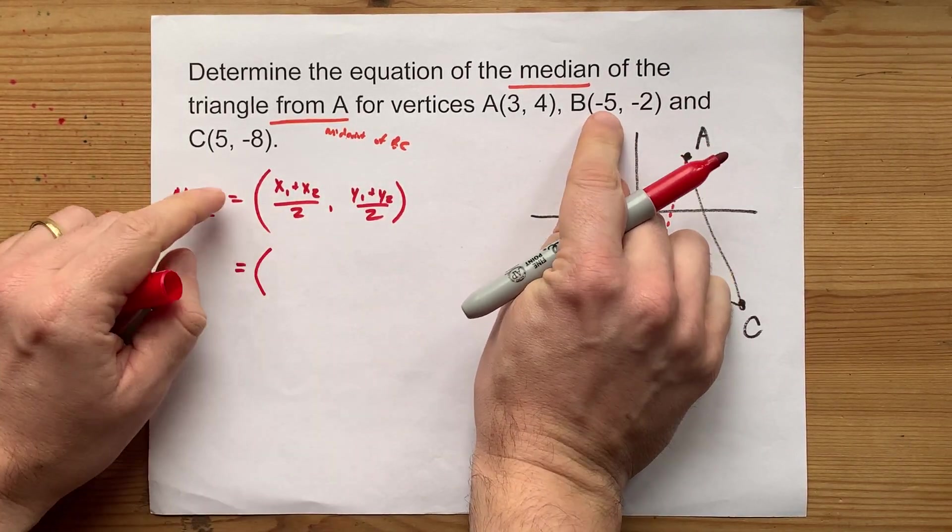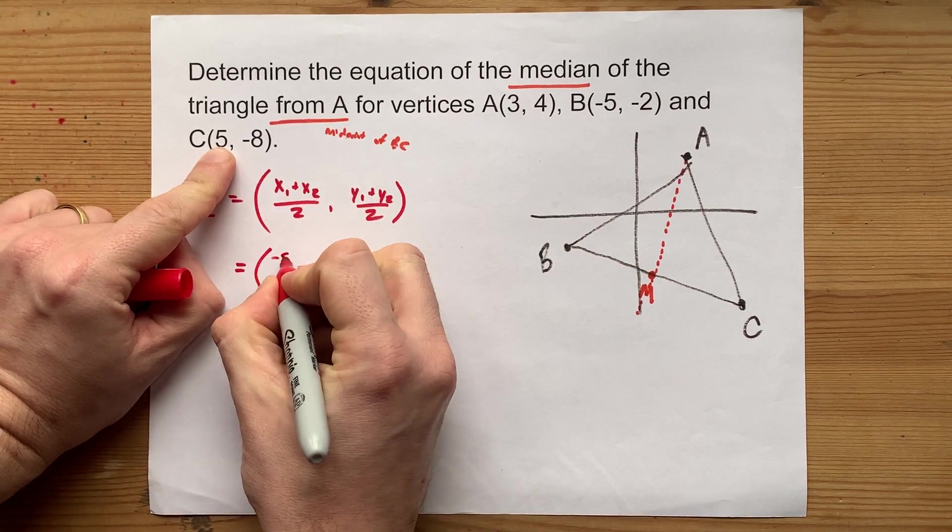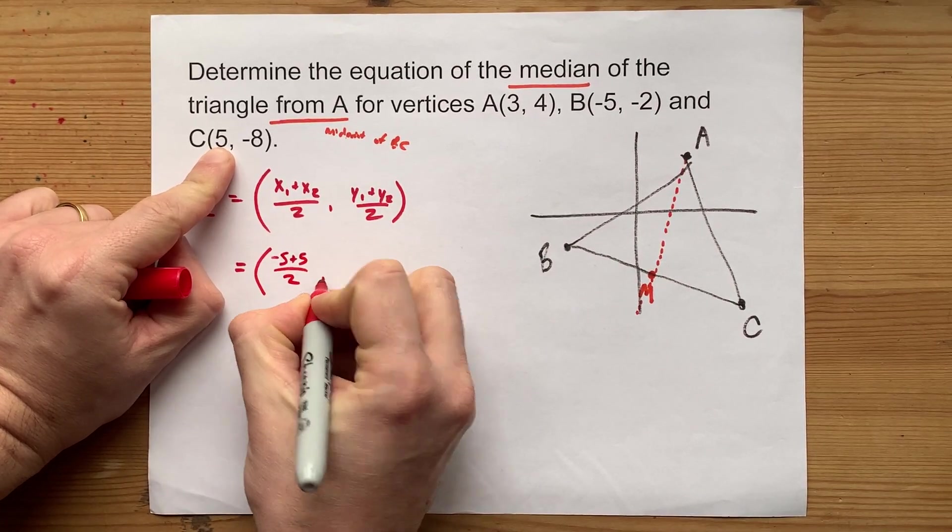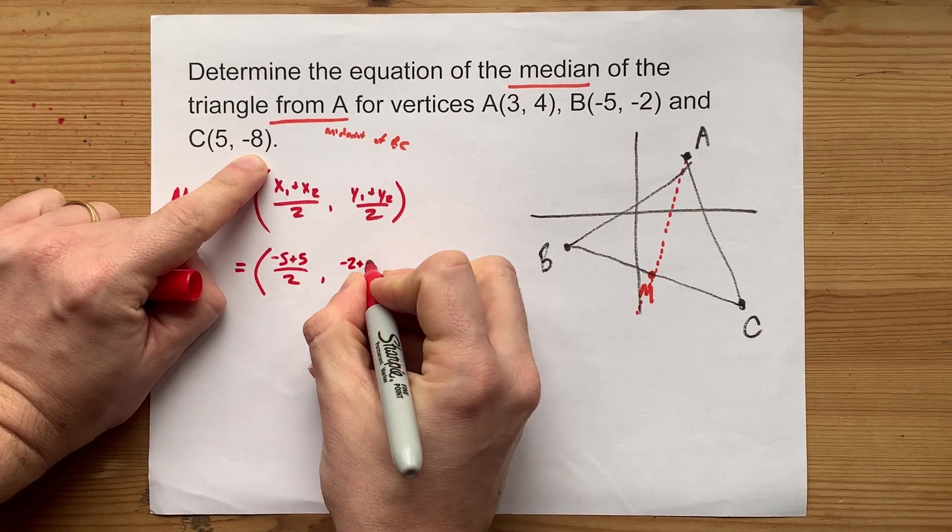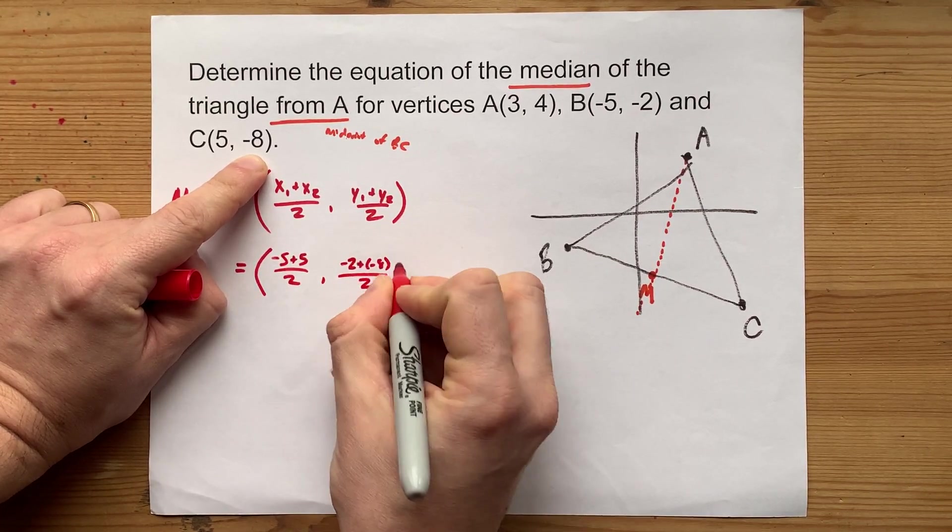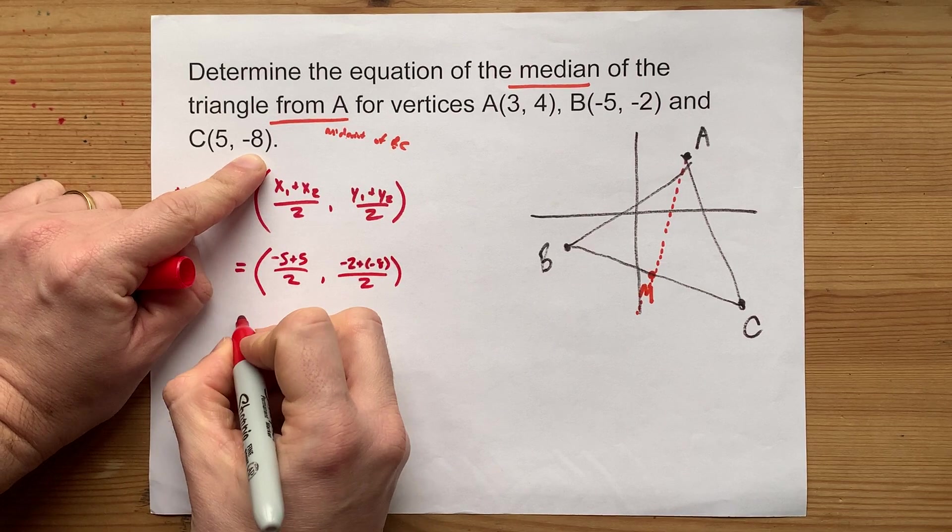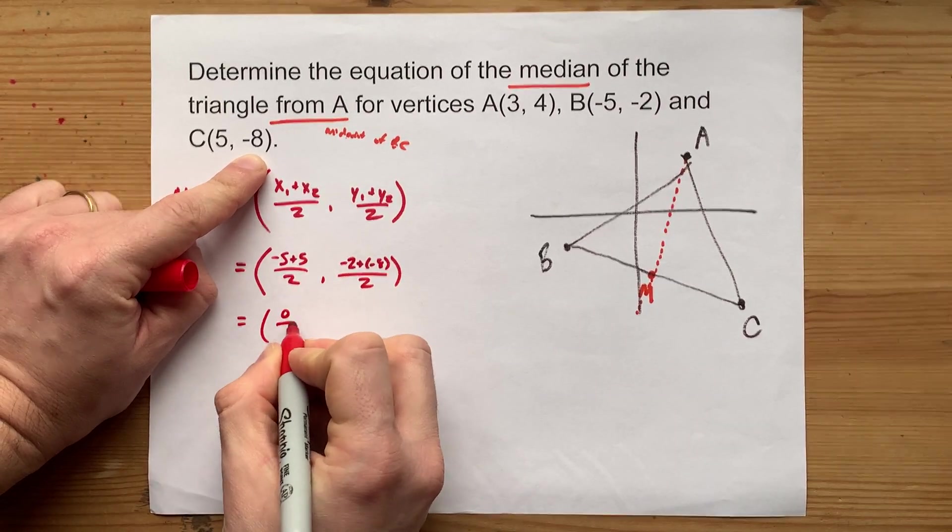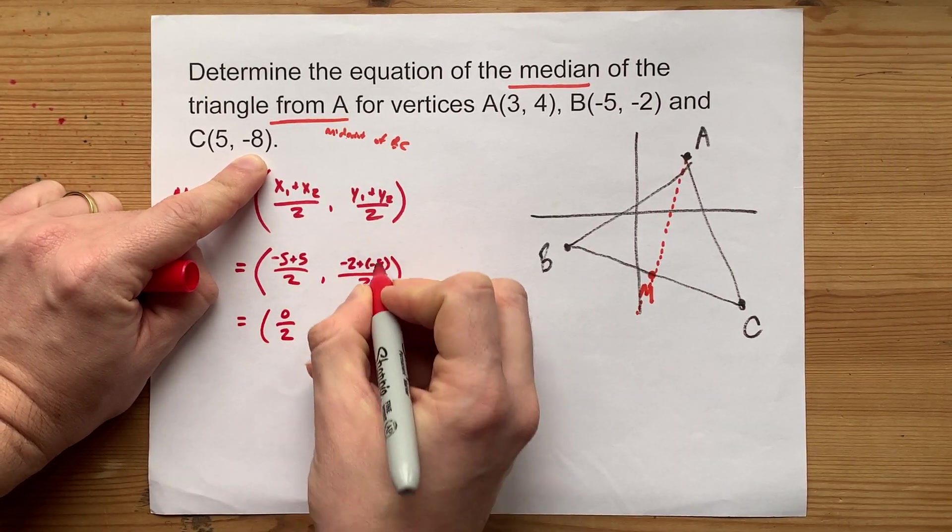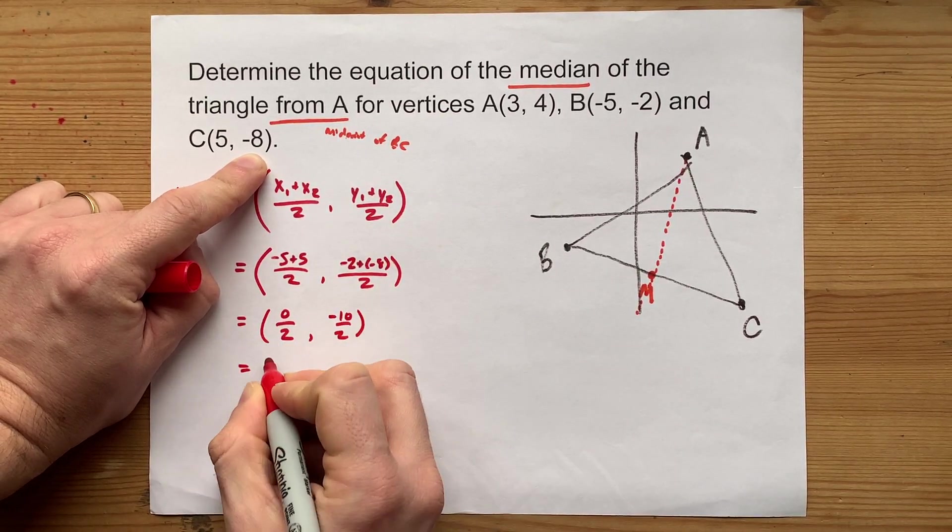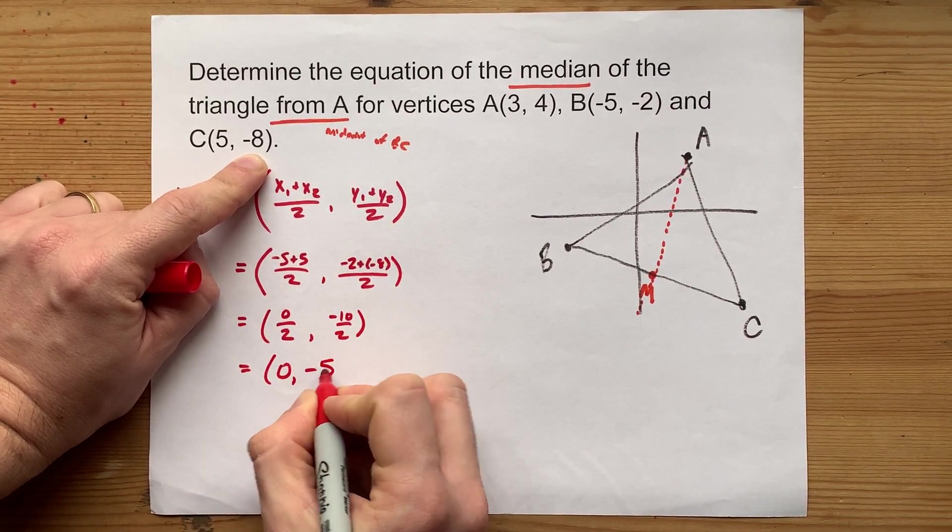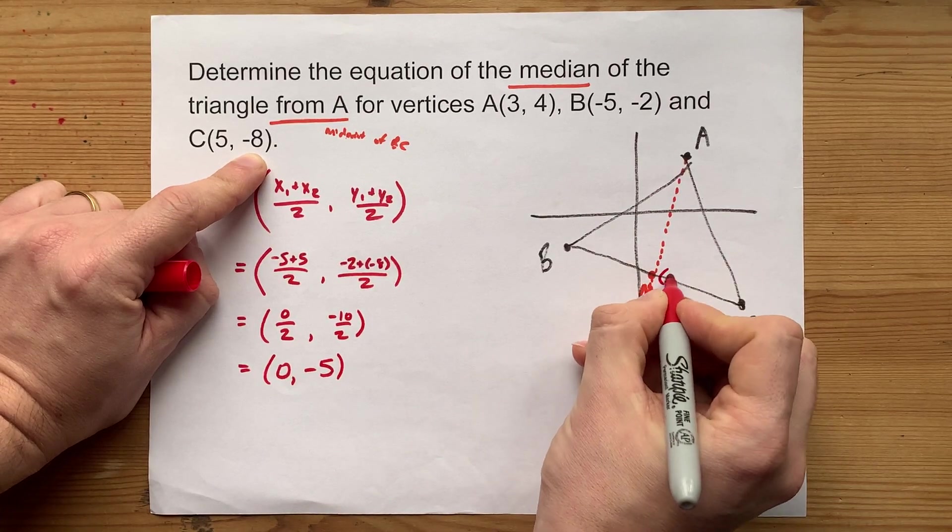The x's here are negative 5 and 5. That's negative 5 plus 5 over 2. And the y's are negative 2 and negative 8. So that's negative 2 plus negative 8 all over 2. That actually gives me 0 over 2 comma and negative 10 over 2, which when I simplify is 0 comma negative 5. Oh, nice round numbers.